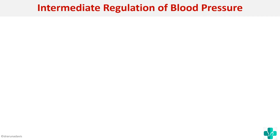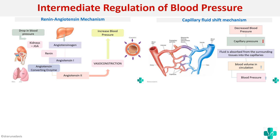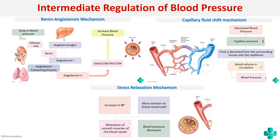In summary, intermediate regulation of blood pressure involves three mechanisms: the renin-angiotensin mechanism, the capillary fluid shift mechanism, and the stress relaxation mechanism. I hope this concept is clear.